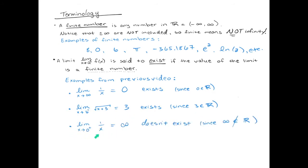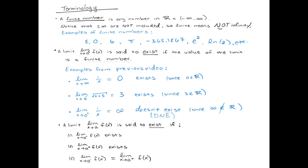And here's one that doesn't exist from the previous video. The limit as x goes to 0 from the right of 1 over x, this limit is infinity. That is not on the real line. That is not a finite number. This does not exist.